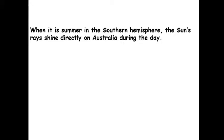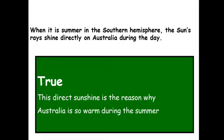When it's summer in the Southern Hemisphere, the sun's rays shine directly on Australia during the day — true or false? This one is true. Australia is in the Southern Hemisphere and it's very warm in the summer because the sun's rays are concentrated and shining directly on countries in the Southern Hemisphere.